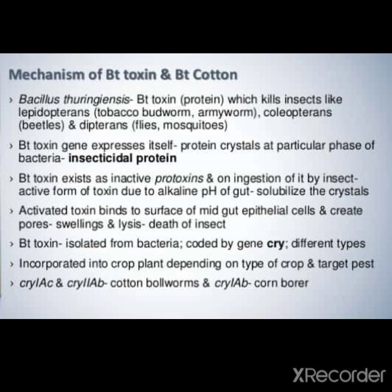So, automatically jodho bhi koi insect ake khau ga os plant nu jidhi vich a gene hai ga, o insect automatically dead ho juga. So, a jodha gene hai - bt toxin gene jodho bacteria to isolate kita jandha hai, innoho ki cry gene encode kar da hai. A is cry gene di different types bhi hai. So, different different cry genes ne - o depend kar da hai kere type di crop use kar de pahe hai, kere type di pest hai, which type of crop, which type of target pest is there.